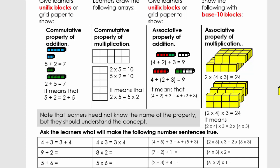Let's quickly look at the commutative property of multiplication. This is an array because we have columns and rows in a diagram, and we can say two times five equals ten. But we can turn this diagram and then say five times two equals ten. This means that two times five equals five times two. I want you to pause the video and explain this to an adult.